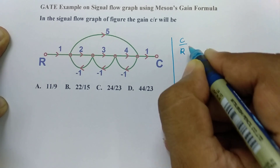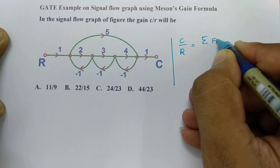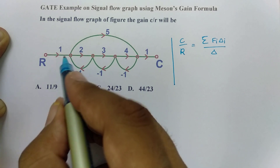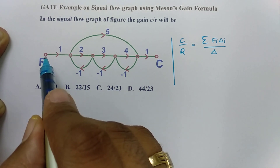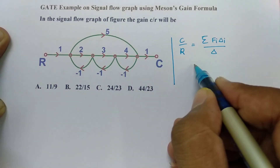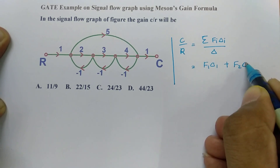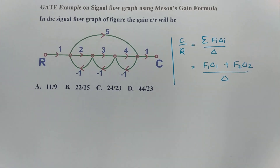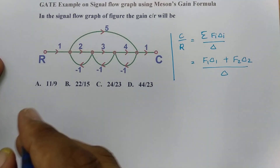C by R, that is the transfer function, is given by the summation of F_i times delta_i divided by delta. Now, if we see how many forward paths are there, there are two forward paths. So this formula will be F1 times delta1 plus F2 times delta2, divided by delta. We will calculate all those terms in this basic formula to get the final answer.